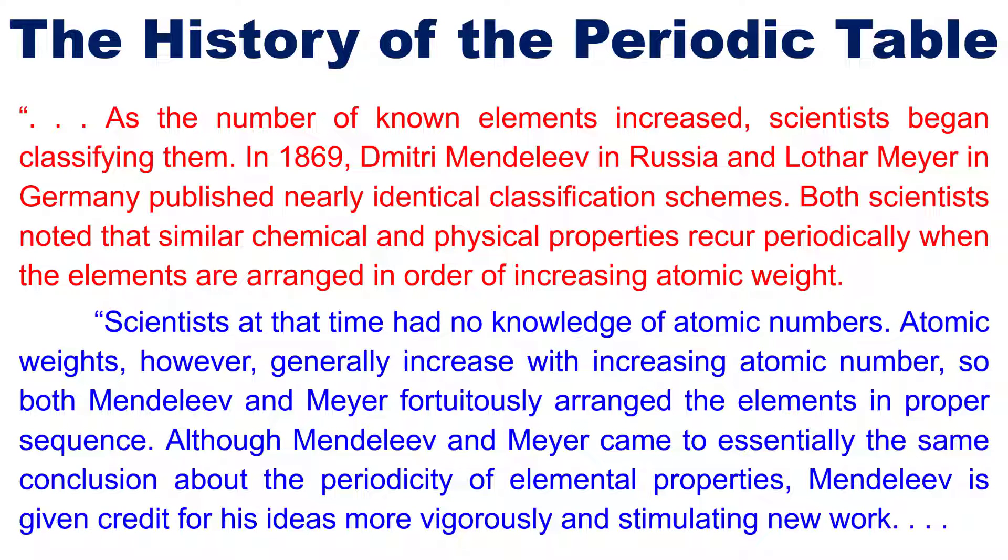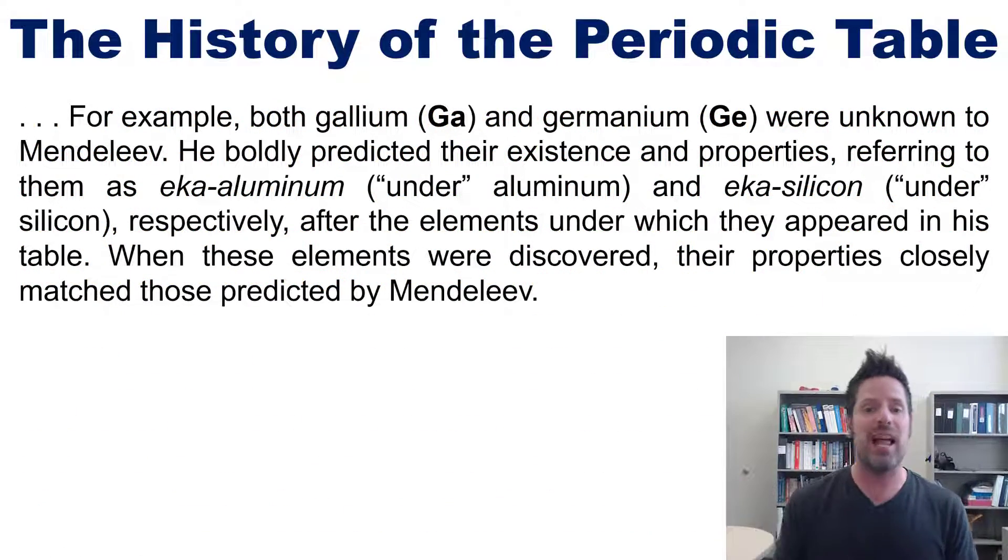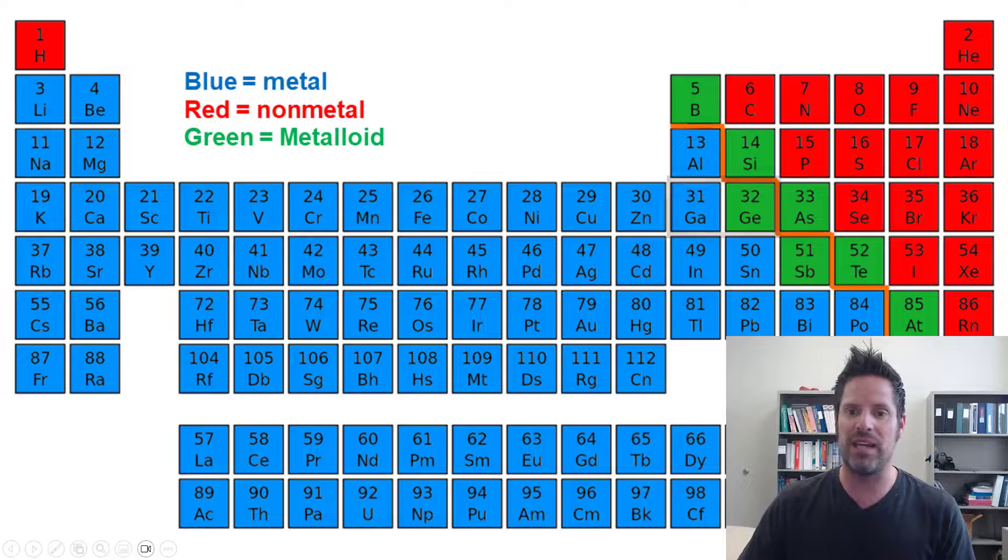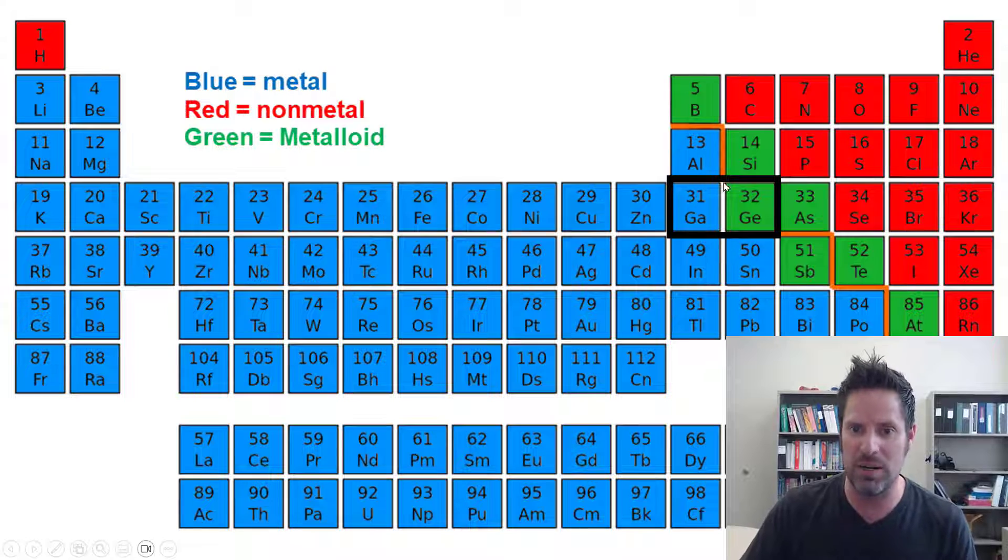Although Mendeleev and Meyer came to essentially the same conclusion, Mendeleev is given credit for advancing his ideas more vigorously. For example, gallium and germanium were unknown to Mendeleev, but he boldly predicted their existence and properties, referring to them as eka-aluminum and eka-silicon—that is, under aluminum and under silicon.